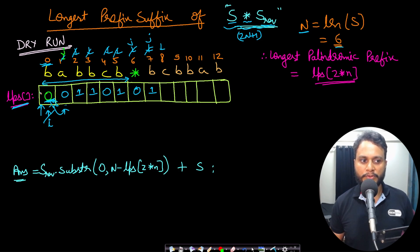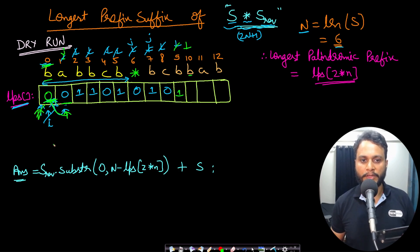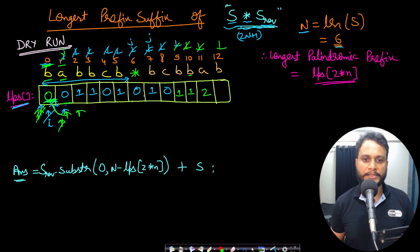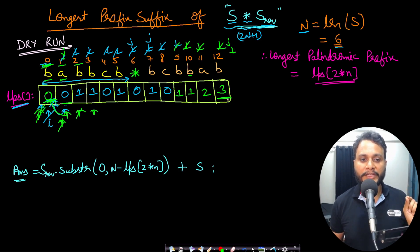Continuing with the s_reverse portion of the combined string: b matches b → 1; c doesn't match a, fall back to 0, c doesn't match b → 0; b matches b → 1; b matches a at next → no, fall back; b matches b → 1; a matches a → 2; b matches b → 3. At the last index of the LPS array the value is 3, meaning the longest palindromic prefix has length 3.